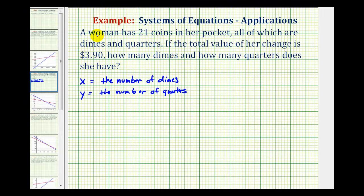The first sentence states that the woman has 21 coins in her pocket. So if x is the number of dimes and y is the number of quarters, this would give us the equation x plus y must equal 21.